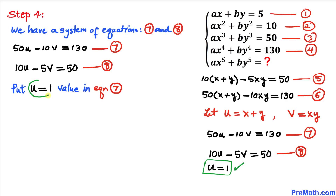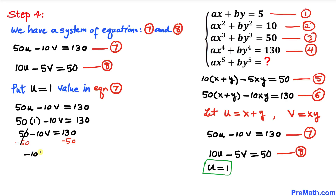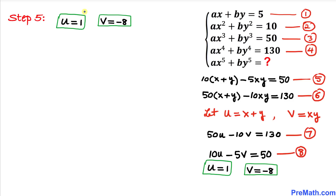Let's plug u = 1 into equation 7: 50(1) − 10v = 130. Subtracting 50 from both sides gives −10v = 80. So v = −8. Therefore u = 1 and v = −8.